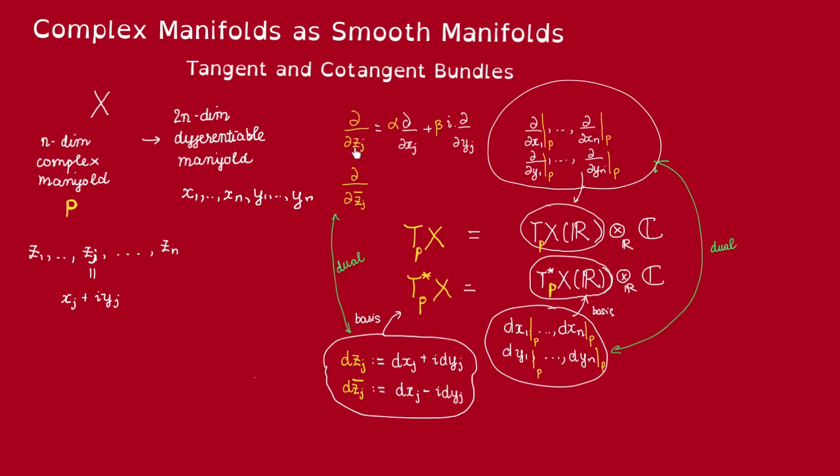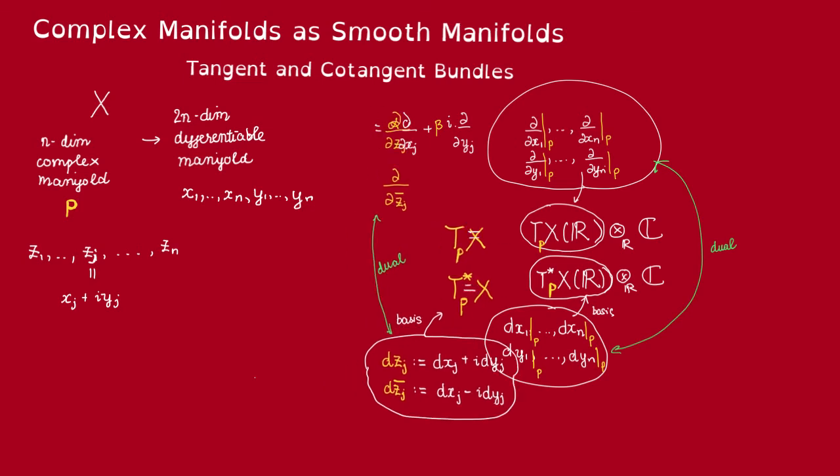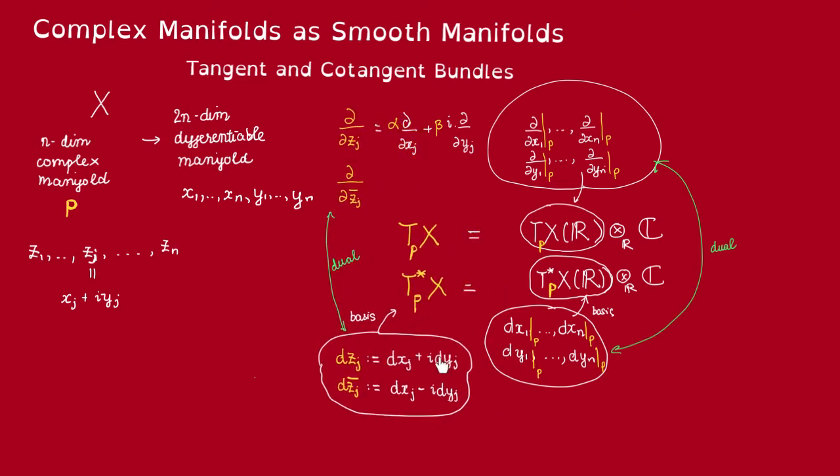Okay, so let's assume that this partial with respect to zj can be written as this linear combination in terms of partial xj and partial yj. We need to find this alpha and beta. We will do so by applying this dzj on it.